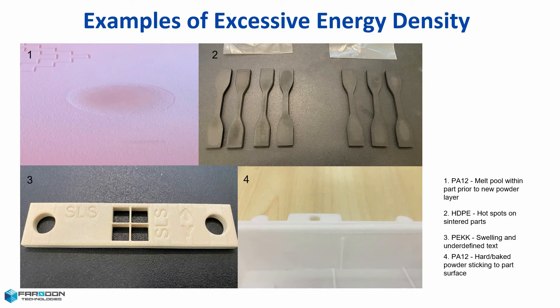Here we have some examples of excessive energy density. In picture number one, we see a melt pool, which is usually seen with dense parts combined with high laser power and part bed temperature, and occurs when heat energy stored within the completed part below the bed surface radiates upward through the part. Number two, we see hot spots, which can be seen on completed parts affected by a melt pool during sintering. Number three, we see swelling and underdefined text, which usually occurs with high laser power and high part bed temperature. At number four, we see hard baked-on powder, which can occur on part surfaces when too much laser energy bleeds through the contour and swells.